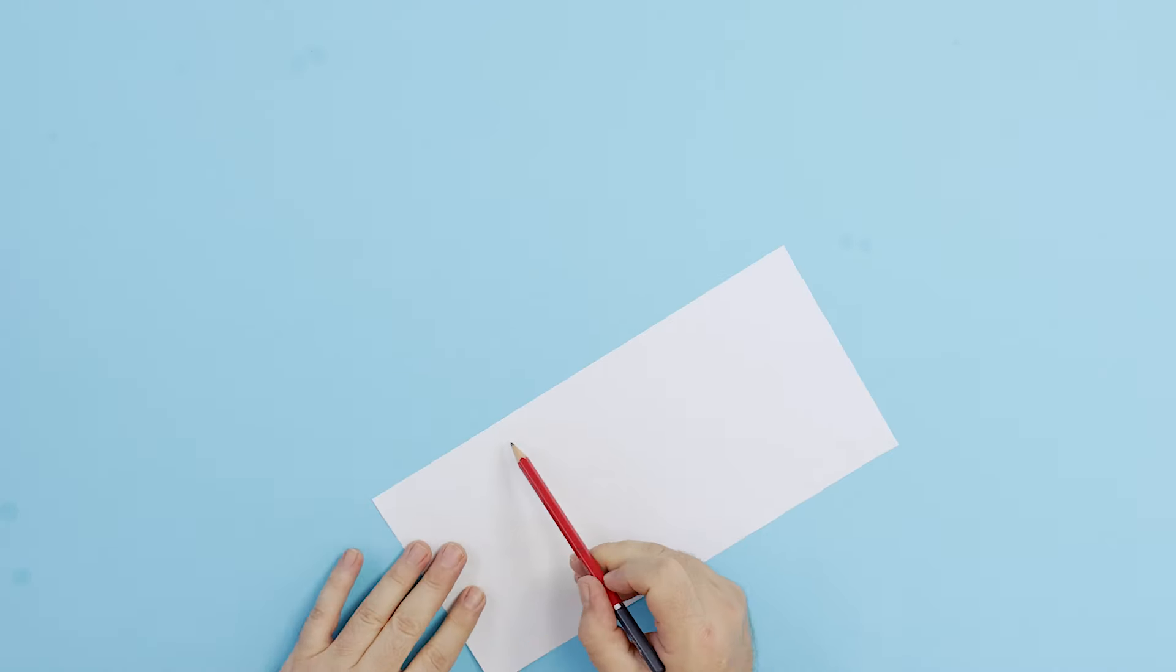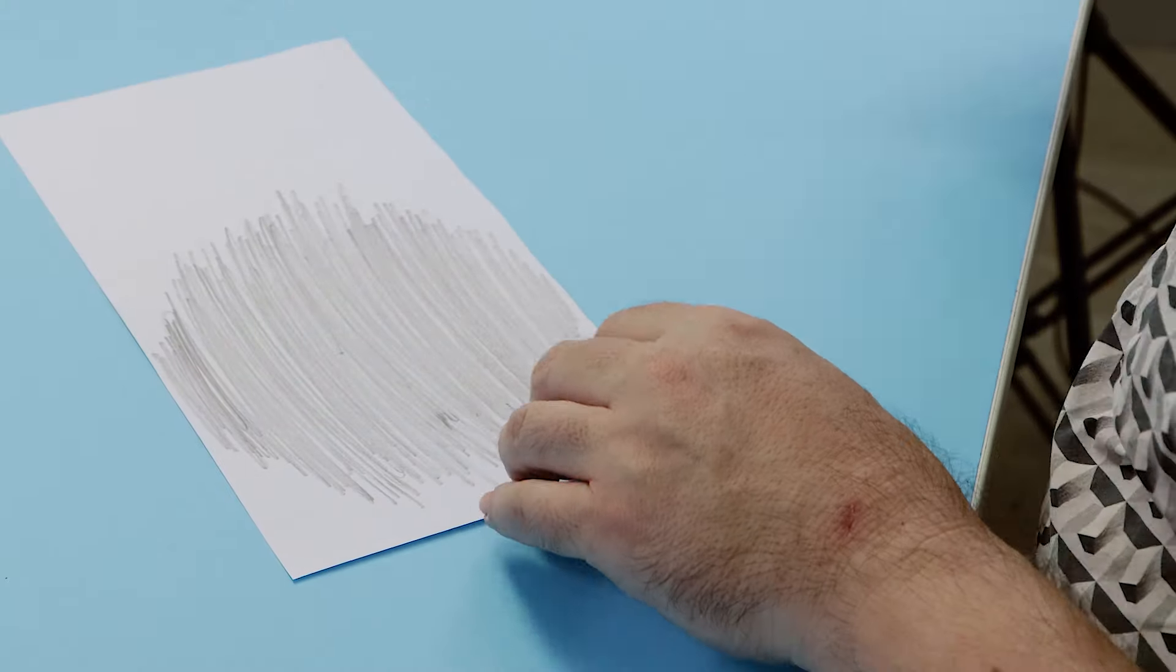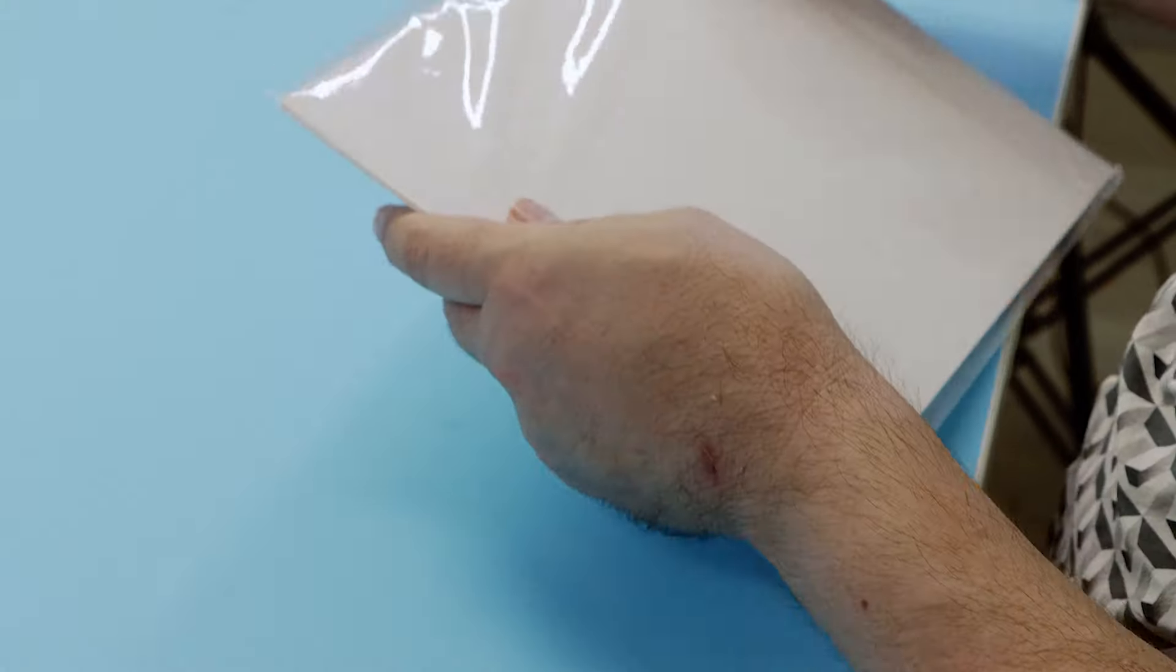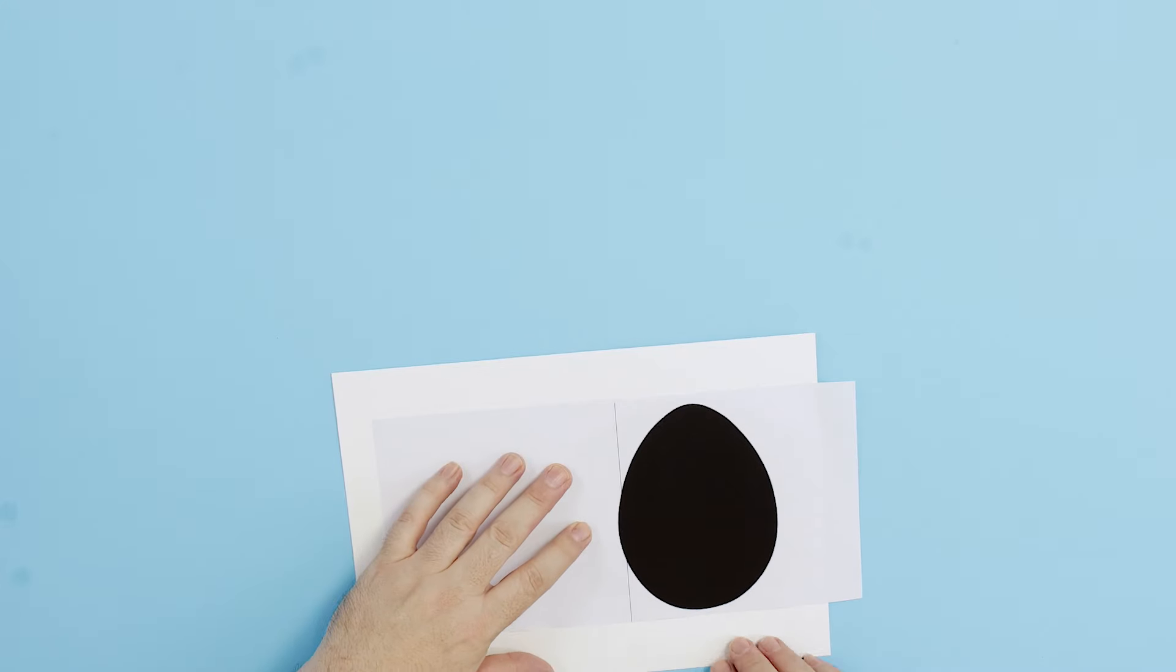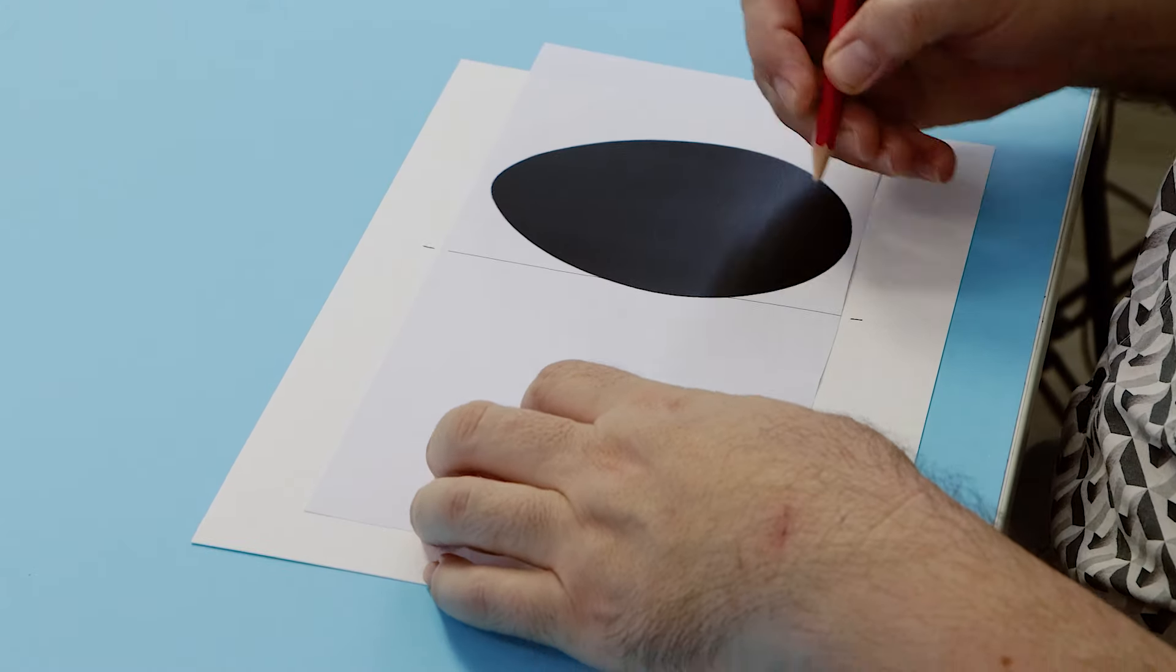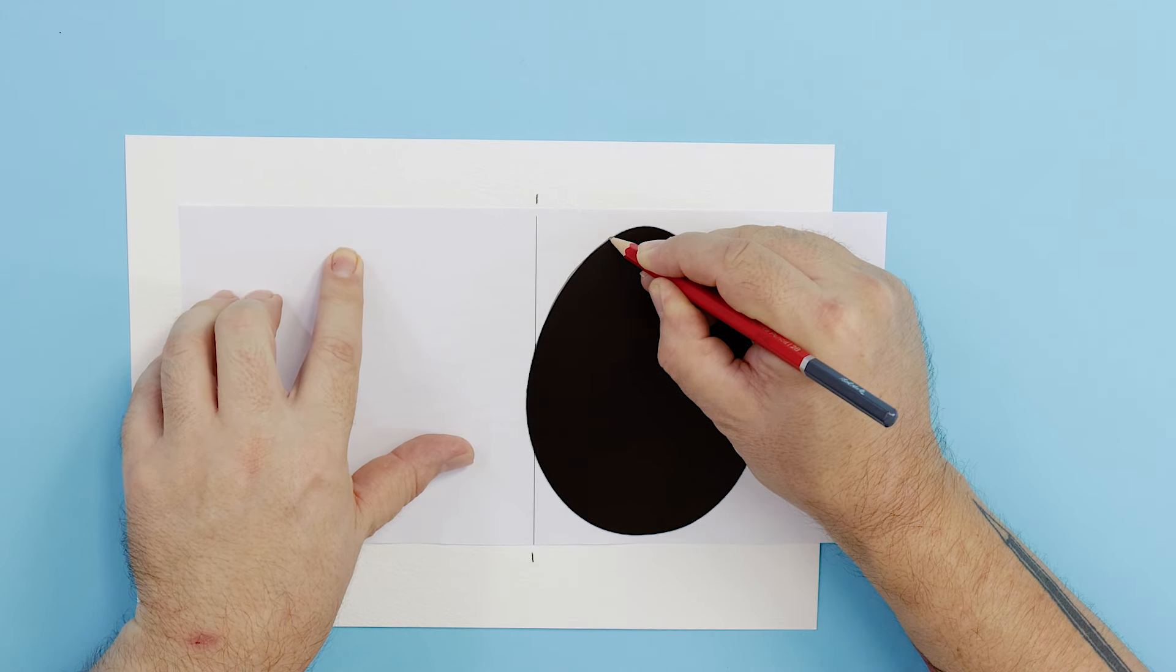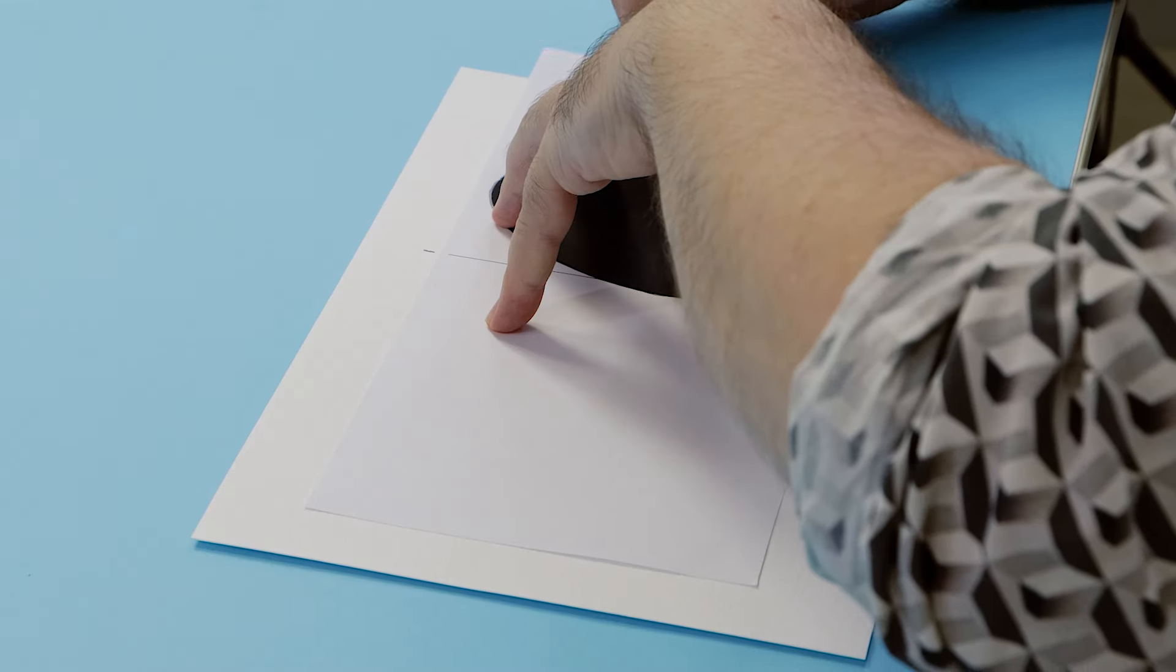We'll make the egg card first, so cut out the image and shade the back side. Flip it over and place it shaded side down into position. Draw in the fold marks and then retrace the egg shape. Remove the sheet and redraw in the eggs so that it is darker.